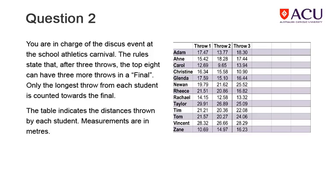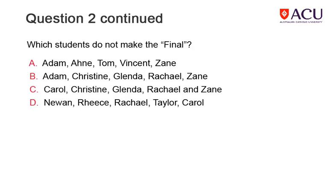This information is for question 2. Read the information and look at the table of results of 3 javelin throws by 13 students, then click the Next button to see the question. You can use the Back button to return to the previous slide to have another look at the table before working out your answer. Choose your answer from the four options.